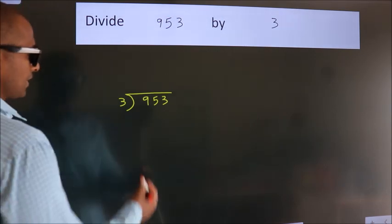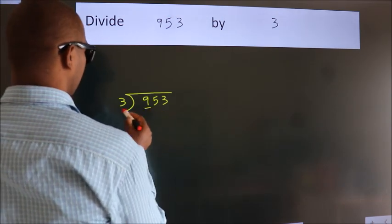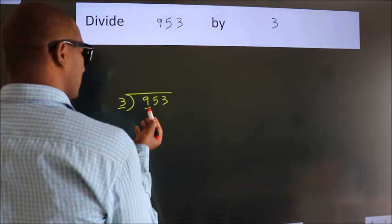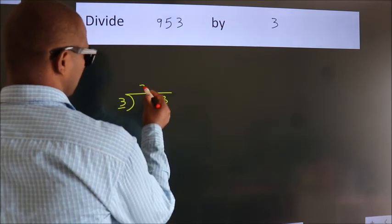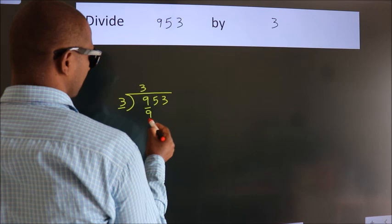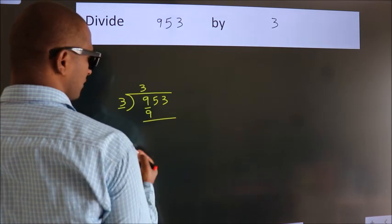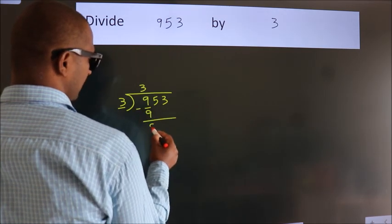Next, here we have 9, here 3. When do we get 9 in the 3 table? 3 threes, 9. Now we should subtract. We get 0.